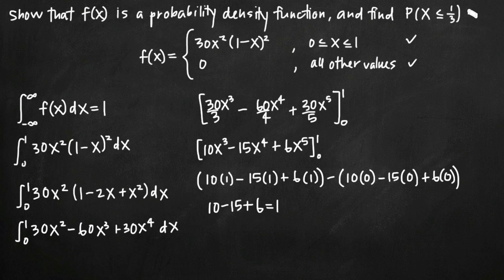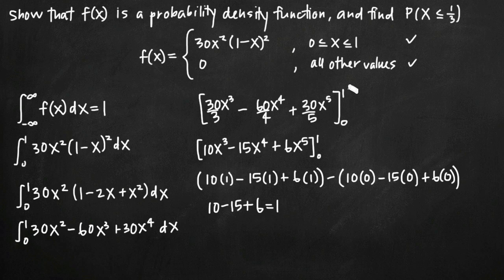Now we want to find the probability that x is less than or equal to 1/3. We do this the same way we found the integral of f(x) from 0 to 1 — we just replace the upper limit of integration with 1/3. Since our interval is bounded on the left by 0, the probability that x is less than or equal to 1/3 really means less than or equal to 1/3 and greater than or equal to 0. So we take the same integral but with 1/3 as the upper limit.